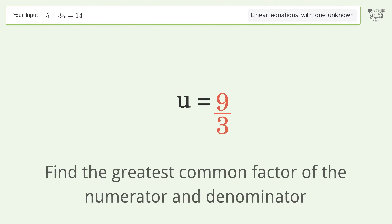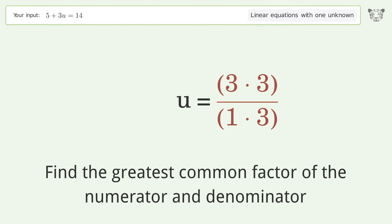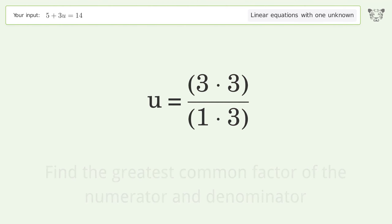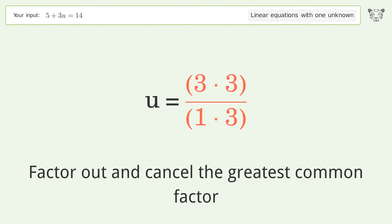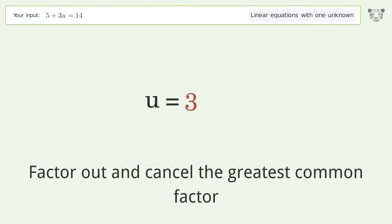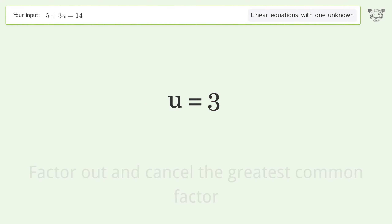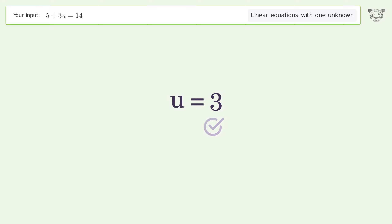Find the greatest common factor of the numerator and denominator, then factor out and cancel the greatest common factor. The final result is u equals 3.